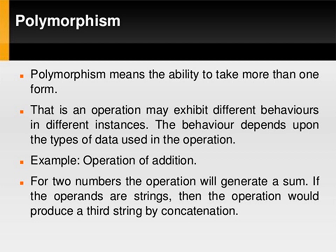The sixth concept of OOPs is polymorphism. Polymorphism means the ability to take more than one form — that is, an operation may exhibit different behavior in different instances. For example, the operation of addition: if you are adding two integers, the result will be an integer; if you are adding two strings, the result will be the concatenation of strings. This is called different behavior in different instances. Accordingly, polymorphism is divided into two types: operator overloading and function overloading.